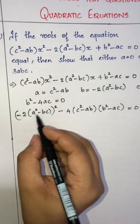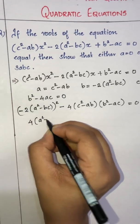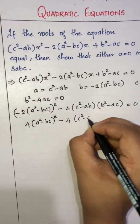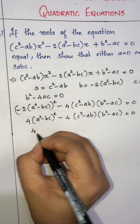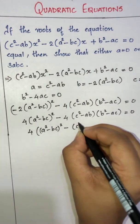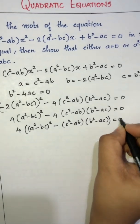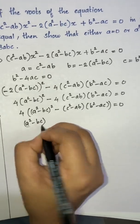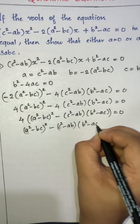That is: 4(a²-bc)² - 4(c²-ab)(b²-ac) = 0. Taking 4 as common: (a²-bc)² - (c²-ab)(b²-ac) = 0.